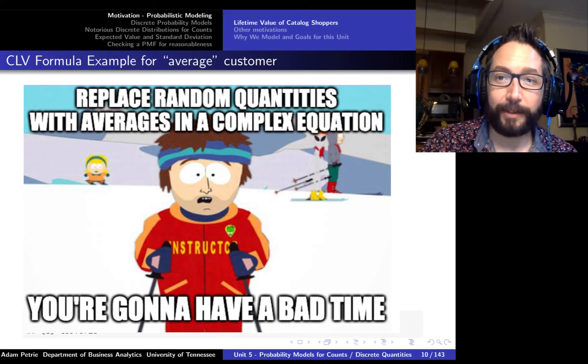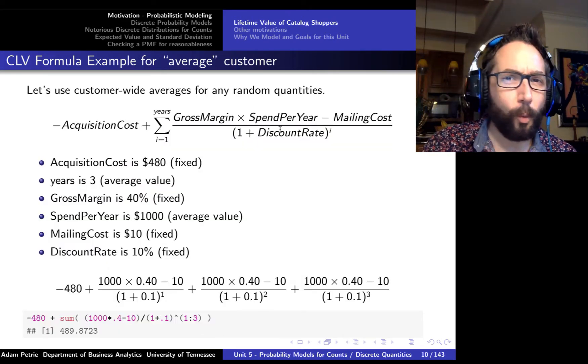The number of years that a customer is making purchases with the company is going to be variable. Some 1, some 10, some 3, some 5. Also, the amount of money that they were spending per year is going to be variable as well. Sure, the average is $1,000, but some are going to spend more, some are going to spend less. By replacing random quantities in equations just with the average, we might actually just not really come up with a good estimate of what the average value is of that final quantity. So why is that? Why aren't averages good enough? Let's explore a couple of scenarios.